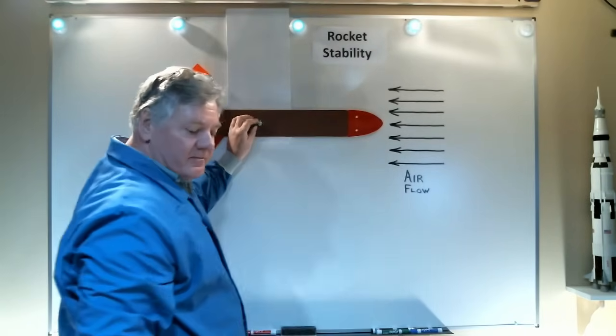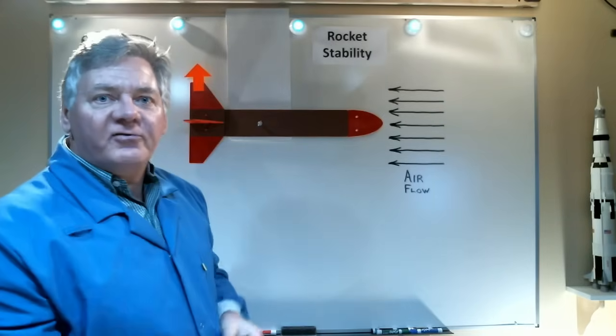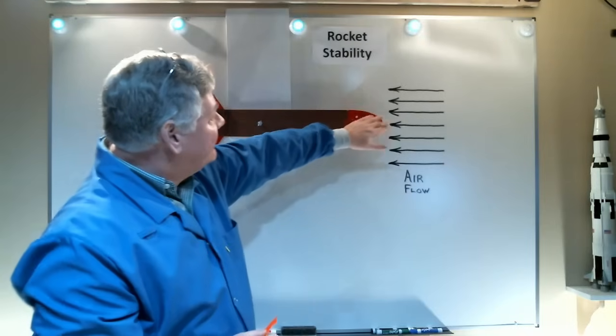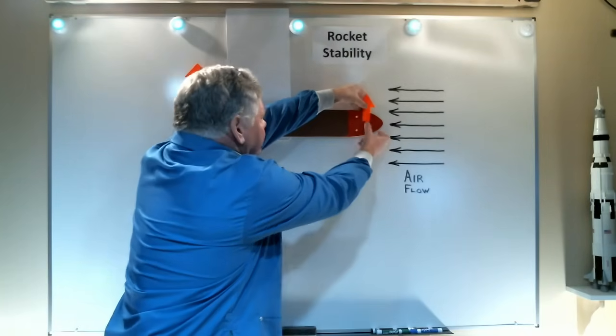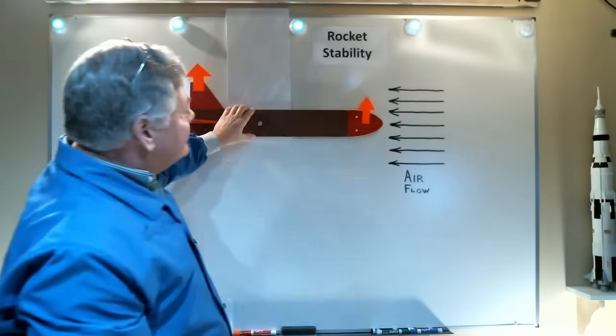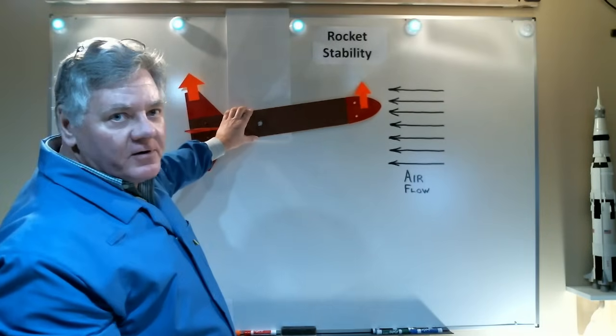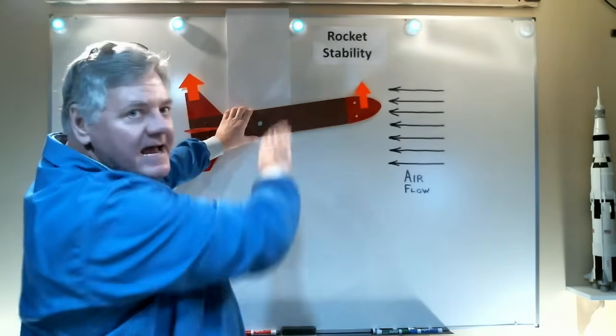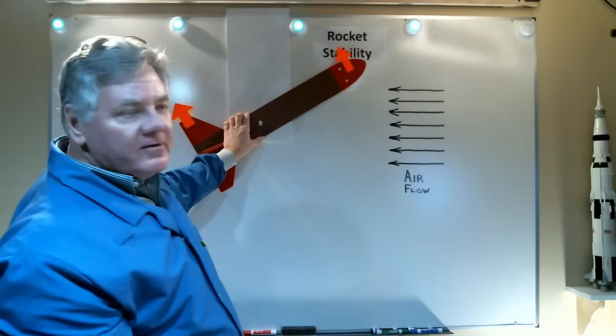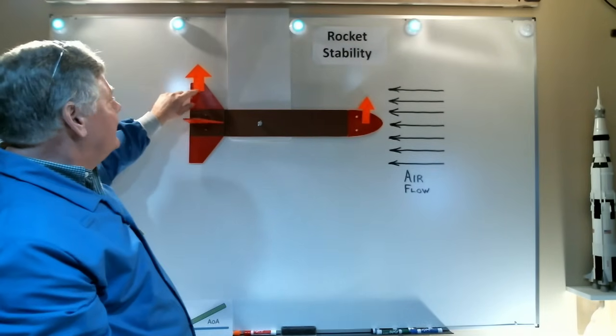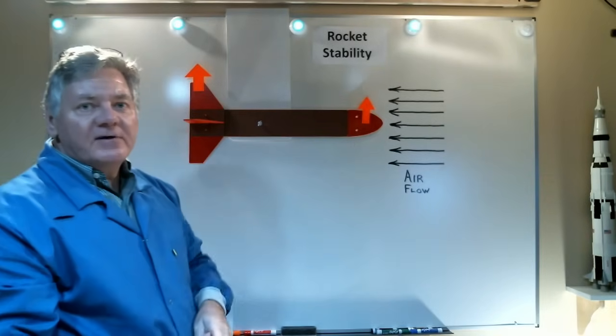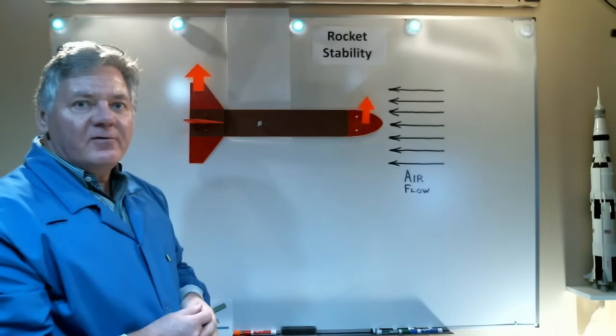Now, the problem with that, however, is that that nose also produces lift. It's a curved surface in the airflow, and it creates a lifting force. And as the rocket attempts to pitch up because of that force, it actually becomes less stable and wants to go all the way around. So, the trick is to make sure that my fin lifting force is greater than the nose lifting force, and thus will have a stable flight.